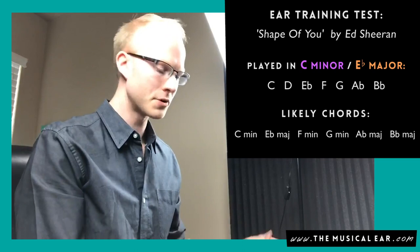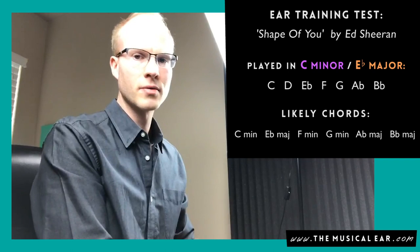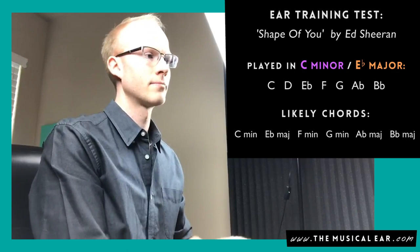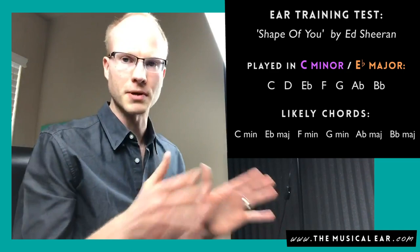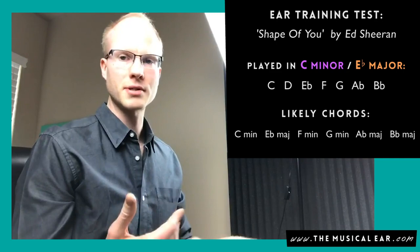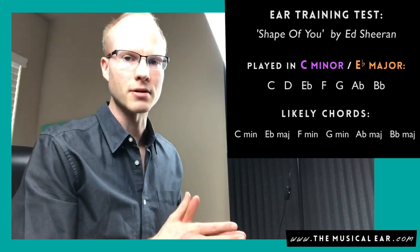C minor, F minor, A flat major, and B flat major. And once you've figured out the chords, you have the chord progression for the whole song because this whole song just loops the same chord progression. So in some ways chords are actually easier because once you've figured them out, it tends to just get repeated a lot.